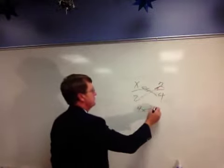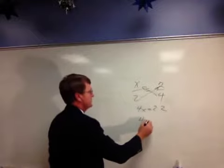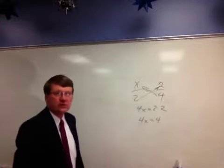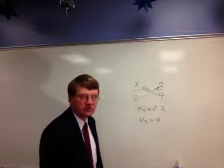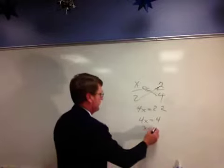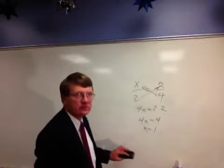4 times x equals 2 times 2. Well, what is 2 times 2? That's 4. What number do you multiply by 4 to get an answer of 4? x has to be 1. You knew that. 1 half is equal to 2 fourths.